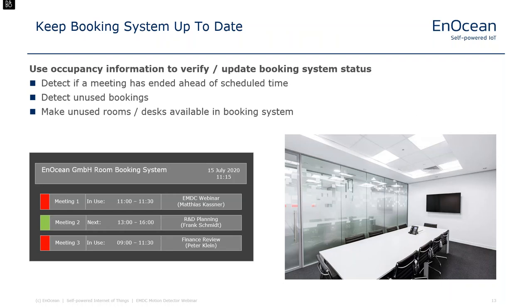The second use case is room booking. In many office buildings, conference rooms come at a premium — there never seem to be enough. You can use information gathered from motion detectors to determine if a meeting room is available, detect if a meeting has ended ahead of schedule, or if a booked room was never actually used. This information can automatically update your booking system, giving a live view of available meeting rooms.